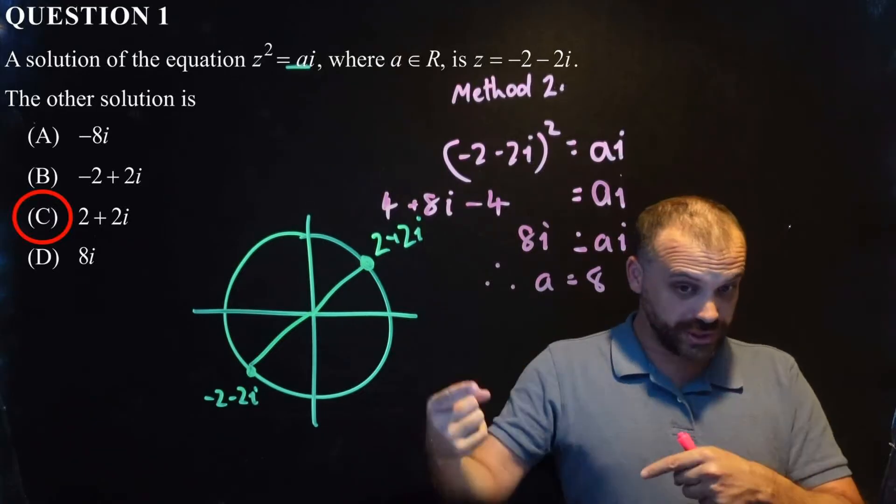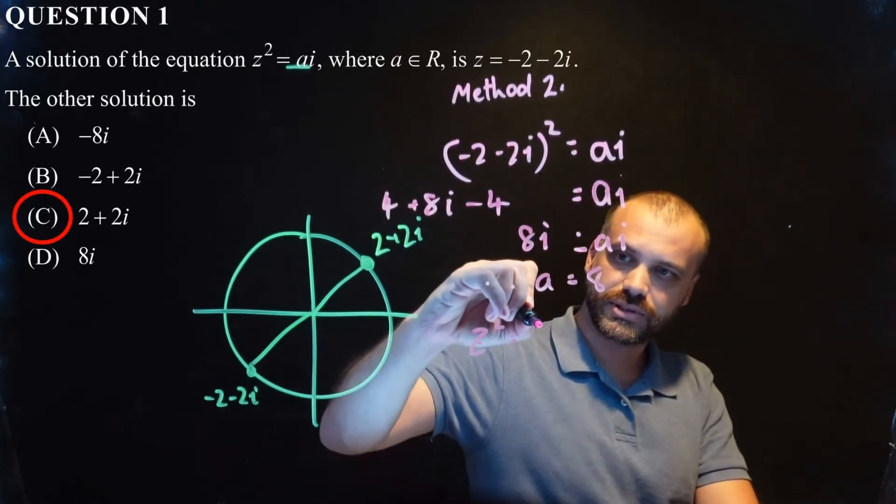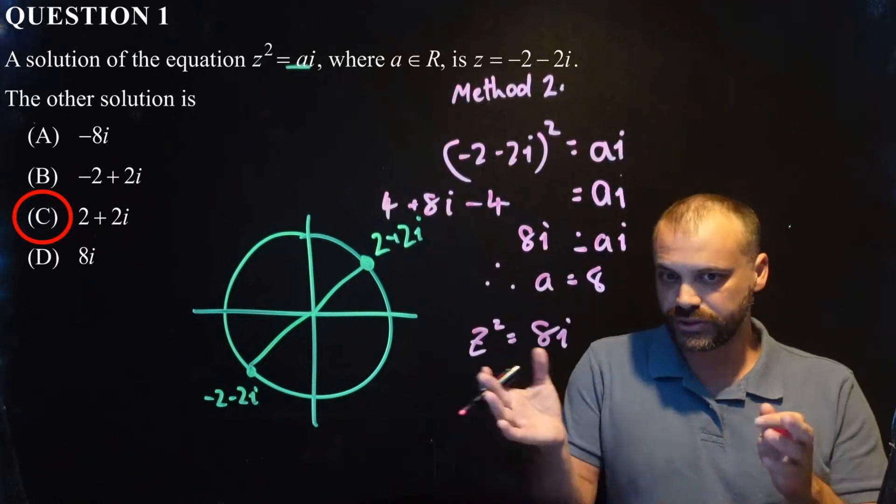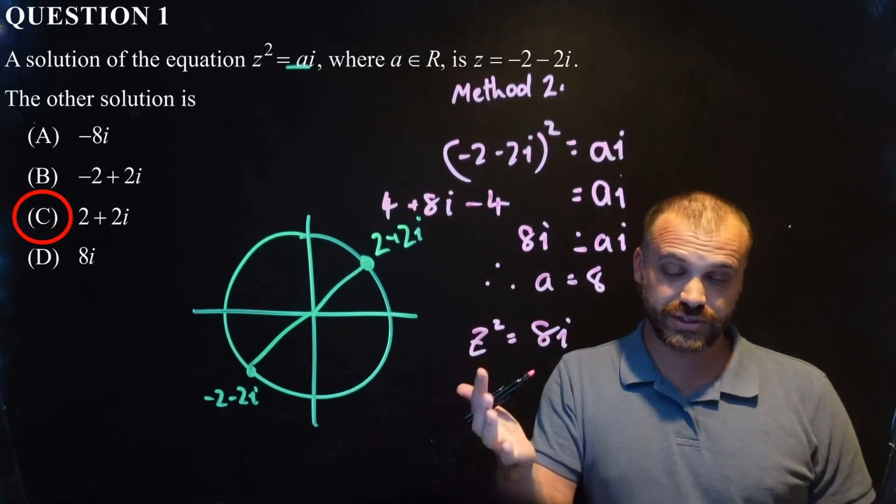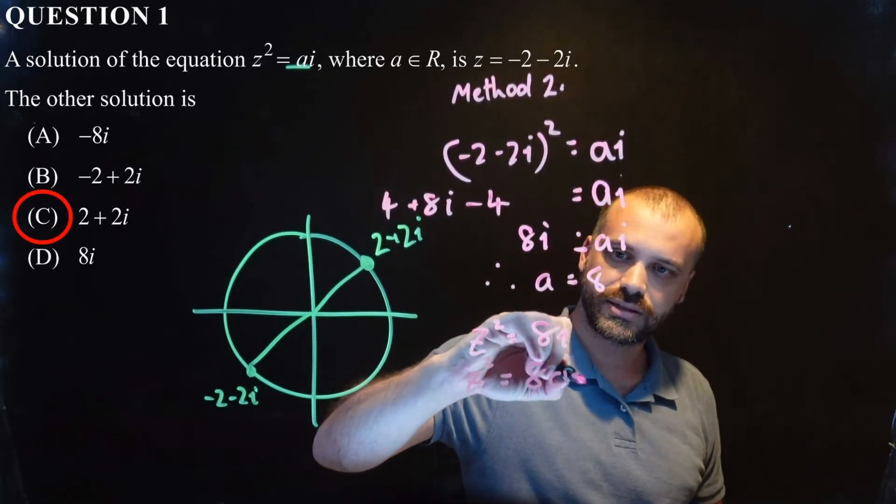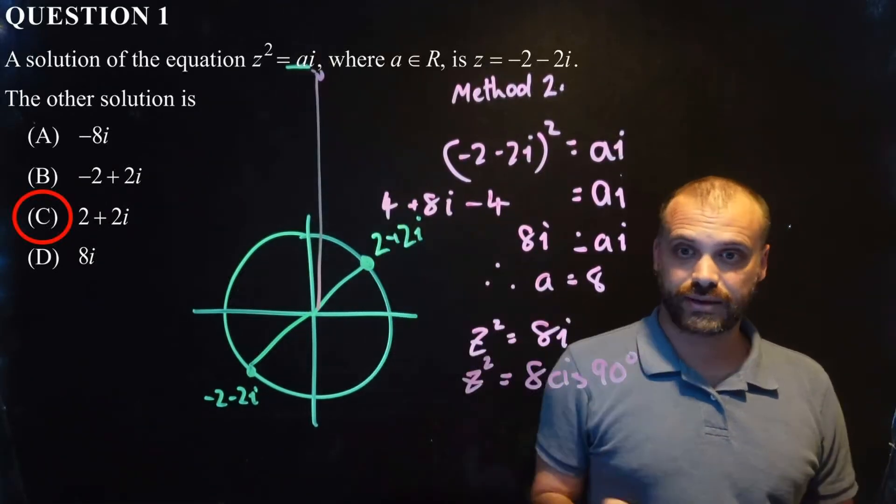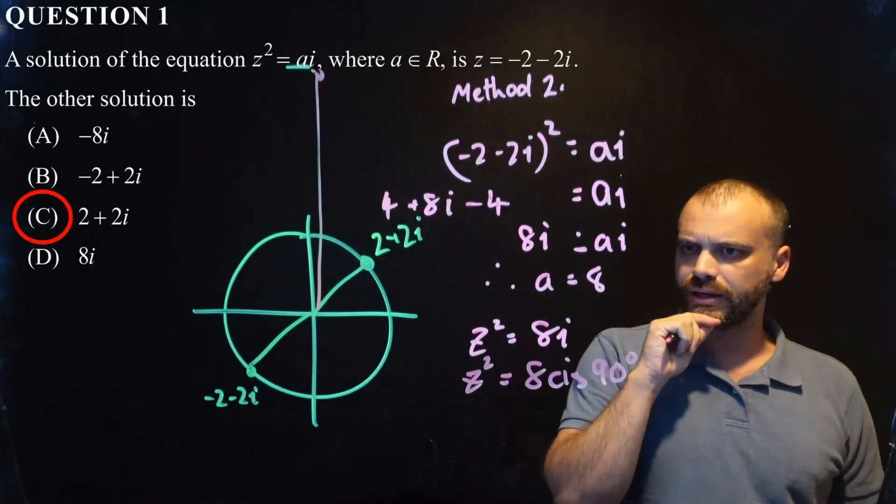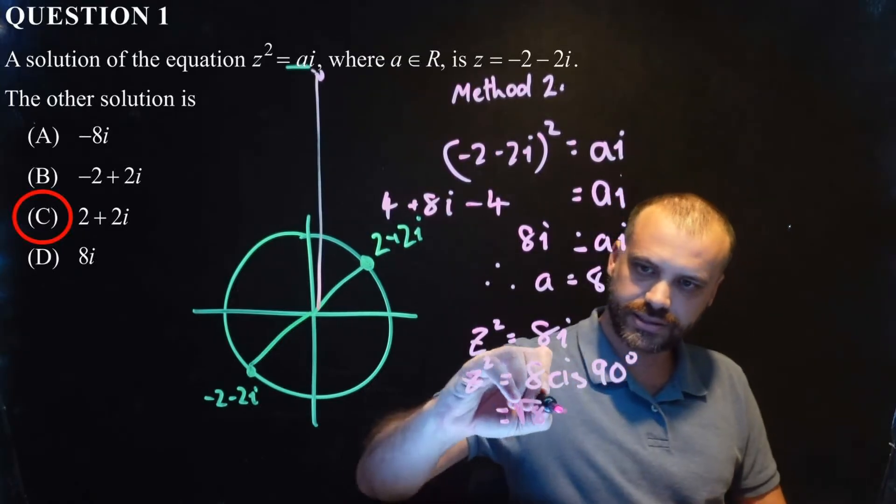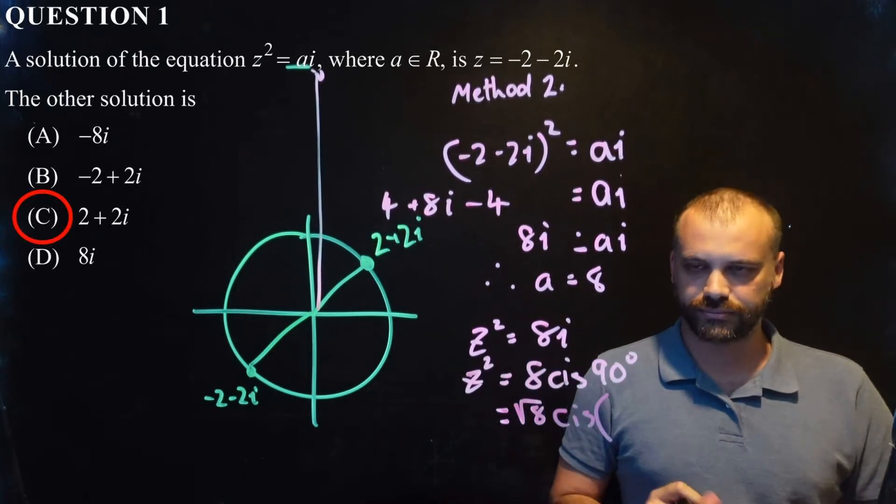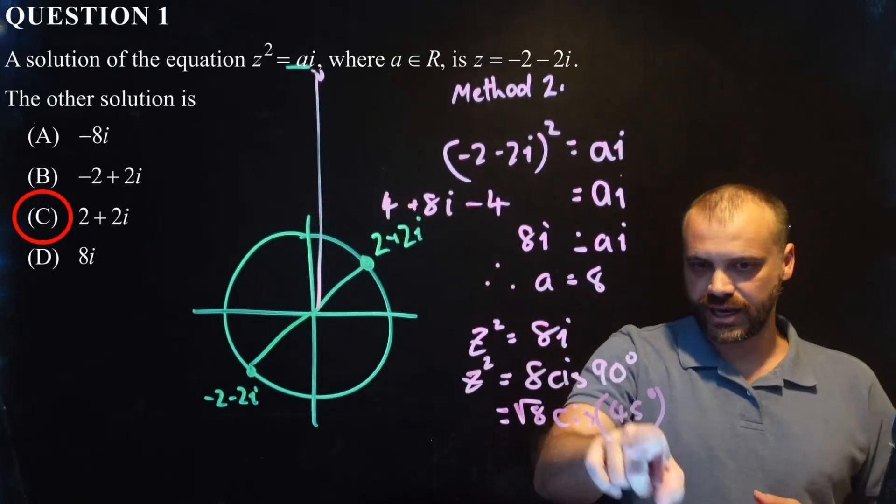Alright, so here, we can see that 8i equals ai, therefore, a equals 8. So, now that I know a equals 8, I can put a back in here, so I can say that z squared equals 8i, and to find the square root of literally any complex number, having it in cis form would be easier. So, z squared equals 8 cis 90 degrees, and you might be wondering where I've got that 90 degrees from. 8i is up there, I know where it is, I draw pictures, right? And then, we're finding the square root of that.